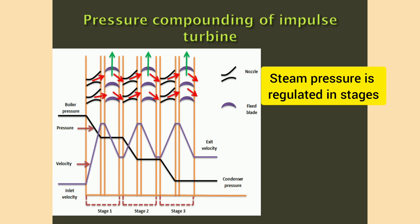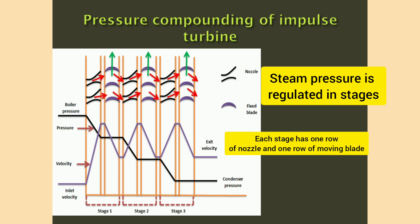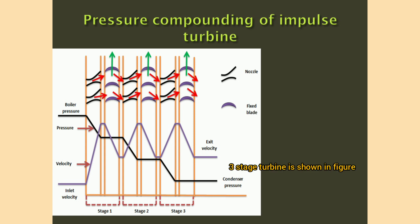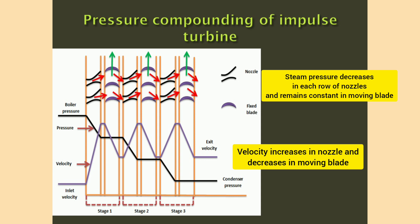Pressure compounding of impulse turbines: here, pressure of steam is regulated in each stage. Each stage consists of a set of nozzles and moving blades. A three-stage turbine is shown in the figure. Pressure of steam decreases in each set of nozzles and remains constant in moving blades, finally dropping from boiler pressure to condenser pressure. Pressure variation is shown in black. Velocity of steam increases in nozzles and decreases in moving blades, shown in blue. This is known as pressure compounding.